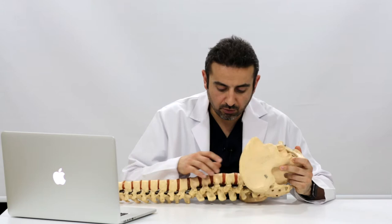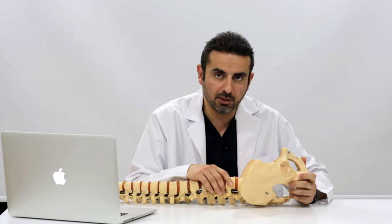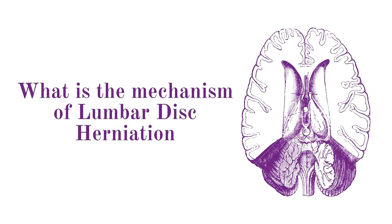Lumbar disc herniation is basically an extrusion of disc material from the intervertebral disc into the spinal canal, with compression of the nerve roots and neural elements inside or just outside the spinal canal. That is the definition of lumbar disc herniation.